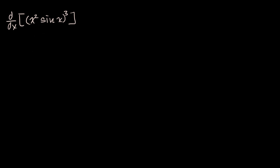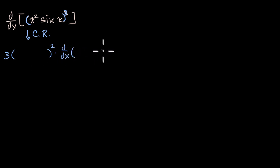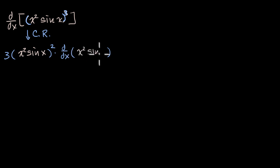There are actually multiple techniques. One path is to do the chain rule first. I'm taking the derivative with respect to x of something to the third power, so it would be three times that something squared, times the derivative with respect to x of that something. The something in this case is x squared sine of x. This is just an application of the chain rule.